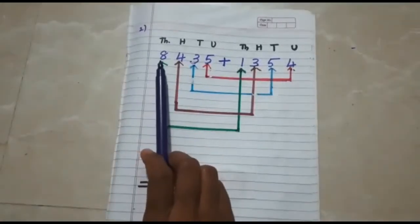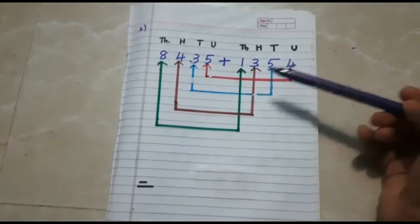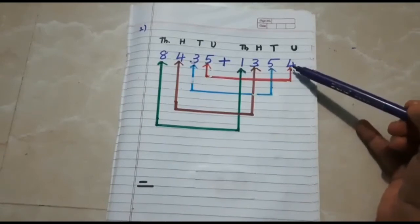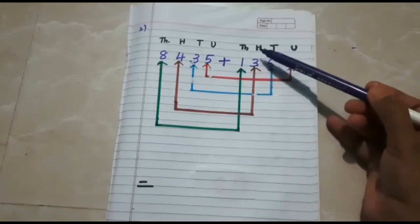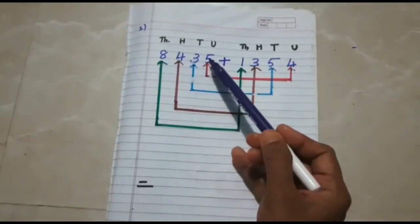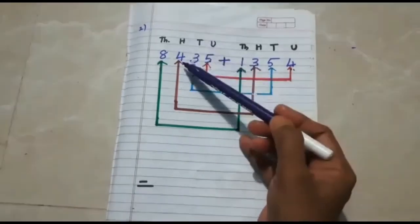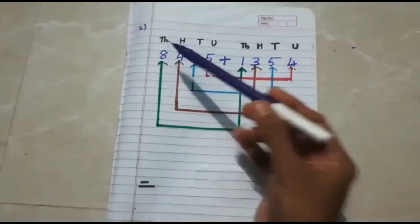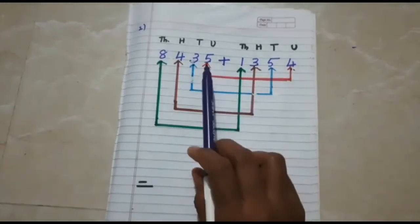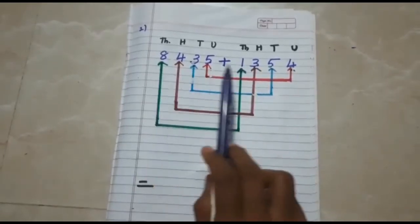Question number 2: 8,435 plus 1,354. In 1,354, the place value of 4 is units, place value of 5 is tens, place value of 3 is hundreds, and place value of 1 is thousands. Similarly, in 8,435, the place value of 5 is units, place value of 3 is tens, place value of 4 is hundreds, and place value of 8 is thousands. I have written the place values so that I can easily pair units with units, tens with tens, hundreds with hundreds, and thousands with thousands.